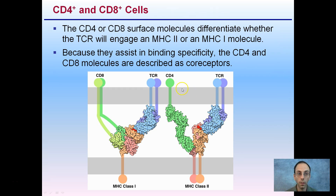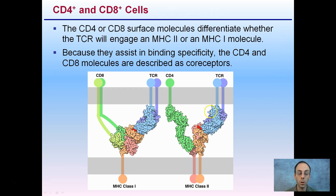Both CD4 and CD8 are surface molecules that differentiate whether the TCR will engage an MHC2 or MHC1 molecule. The MHC class 2 molecule has two binding components, while MHC class 1 has only one. Because they assist in binding with specificity, the CD4 and CD8 molecules are described as co-receptors — very important in the binding and recognition process of the immune system.